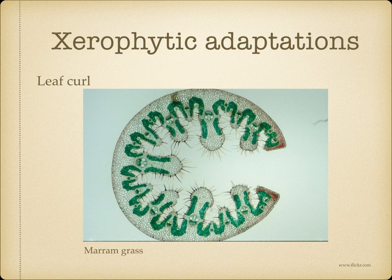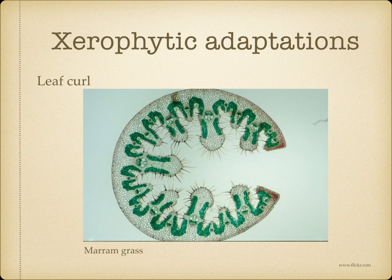Leaf curling — as you can see, this leaf is curled up. Most leaves have their stomata in the lower epidermis. Curling the leaves in a way that protects the lower epidermis from the outside helps to trap a region of still air within the curled leaf. This region becomes saturated with water vapour, so there is no water potential gradient between the substomatal airspace and the outside, and transpiration is reduced. Here you can see marram grass, which rolls up its leaves when transpiration rates are high, for example in hot and windy conditions.